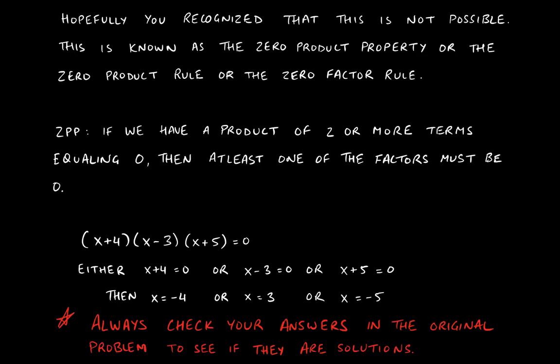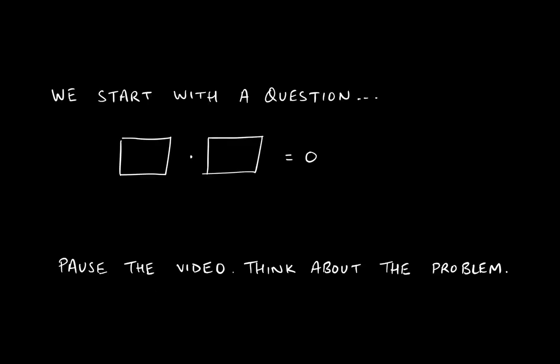Hopefully you thought about it and recognize that this is not actually possible. The reason why is because no matter what you do, it's not possible to come up with numbers that you multiply and get zero as the product, unless one of the numbers is zero — or, in fact, both numbers are zero.